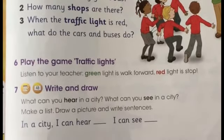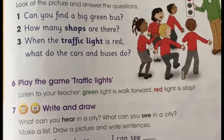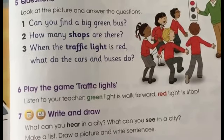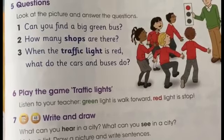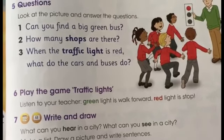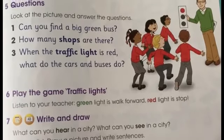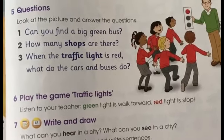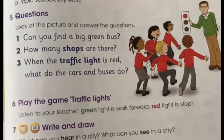Exercise seven: Write and Draw. What can you hear in a city? What can you see in a city? Make a list. Draw a picture and write sentences. You should write: 'In a city, I can hear...' and 'I can see...'